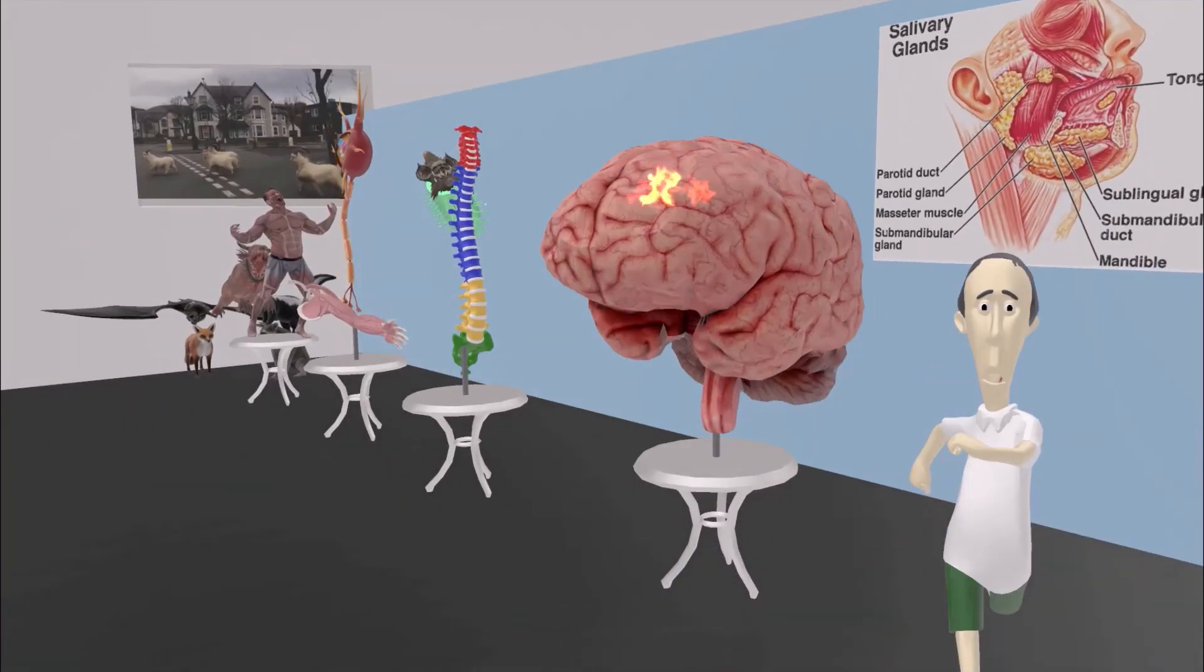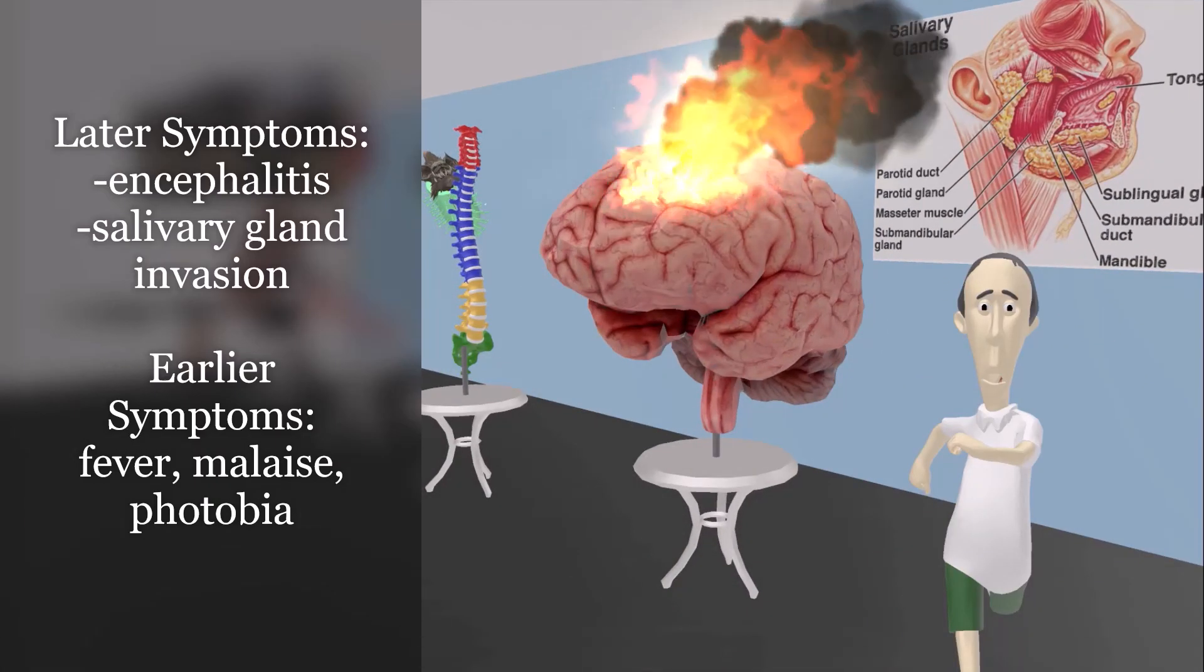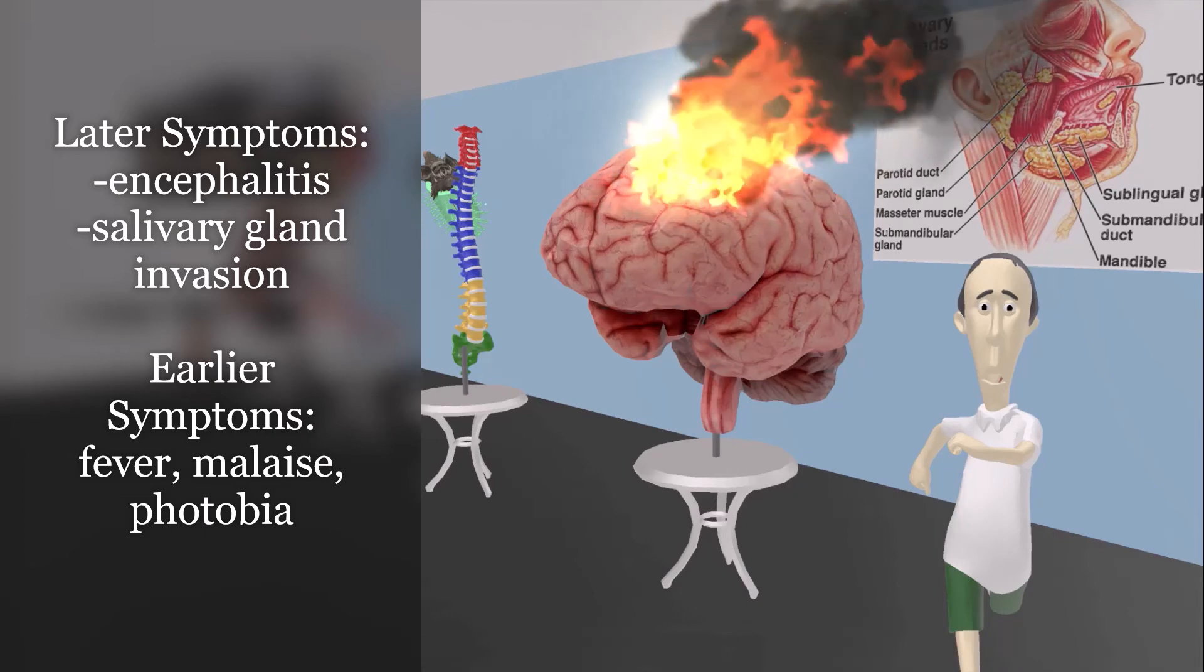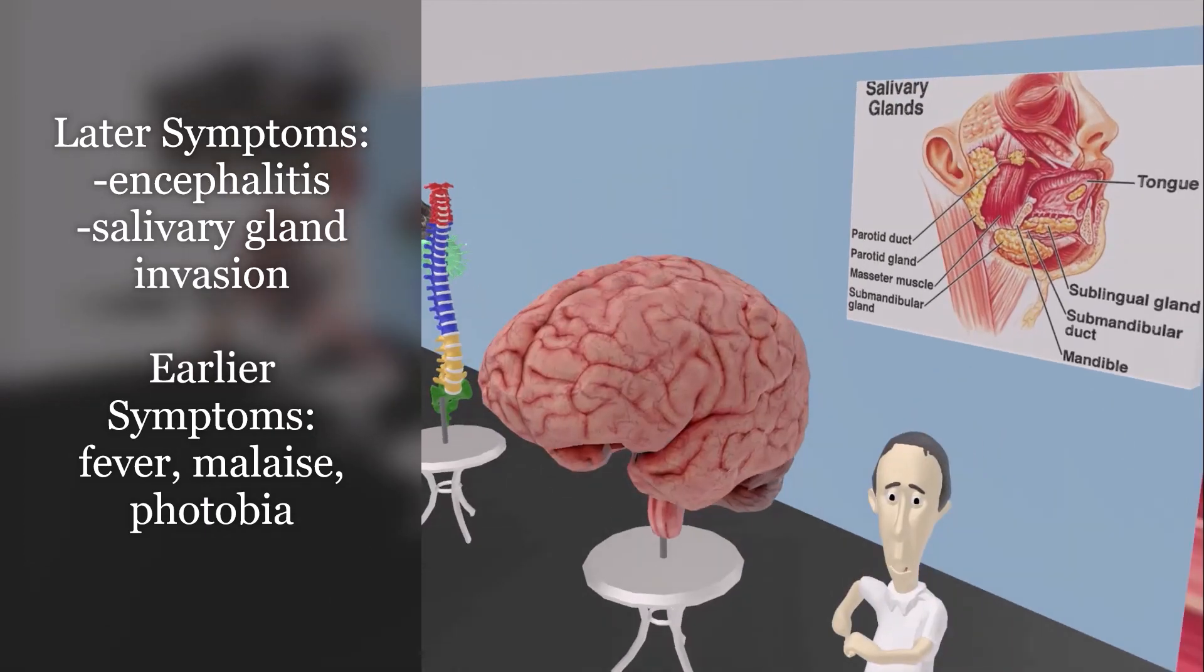And then we get to the brain over here, which is on fire, which helps us remember the encephalitis, which may occur when rabies virus infects the brain. And we see the picture of the salivary glands on the wall of the anatomy lab, which helps us remember that after traveling from the brain, rabies virus can infect various structures, including the salivary glands, but also the eyes.